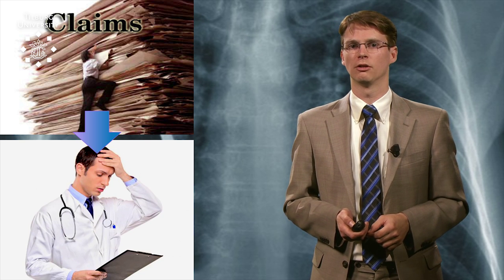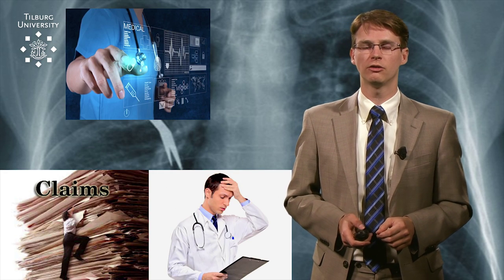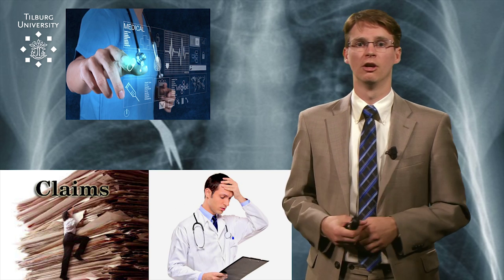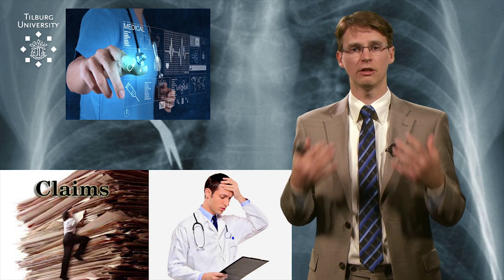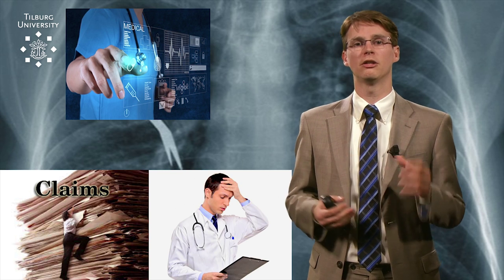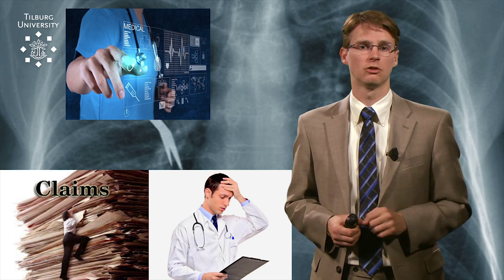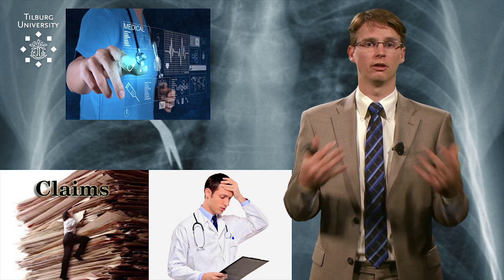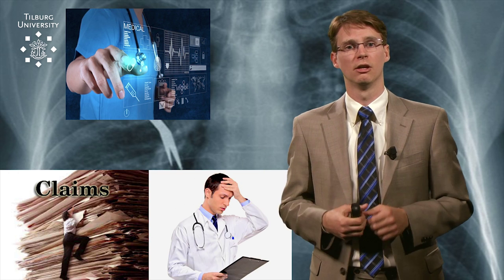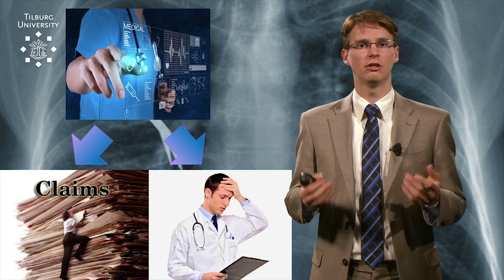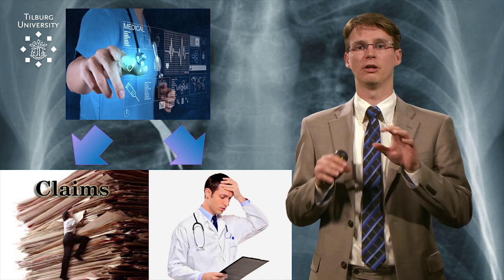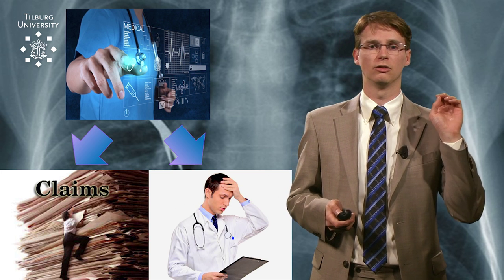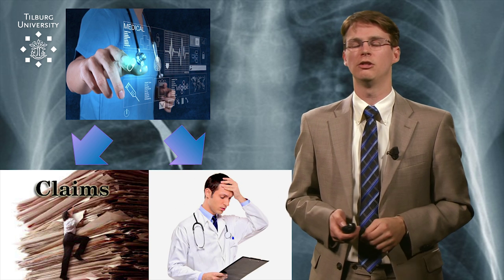There could be rival explanations here. One is technology. Suppose new technologies allow doctors to perform or order new tests and diagnose patients differently — that explains why physicians change their behavior. Those same technologies could also determine the number of claims, because new technology makes it easier to determine whether a doctor made a mistake, so the number of claims might go up. Technology, or technological advancements, thus explains both physician behavior and the number of claims — a clear spurious relationship.